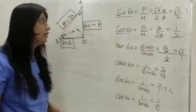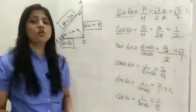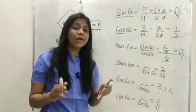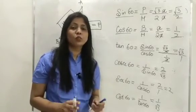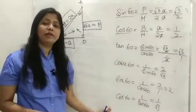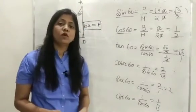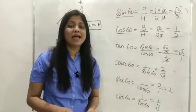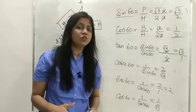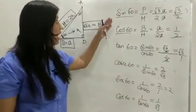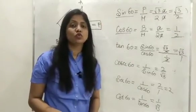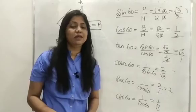These are the 6 trigonometric ratios for the 60 degree angle. In today's class we have seen how to find the 6 trigonometric ratios for 30 degrees and 60 degrees. In the next class we will see how to find the 6 trigonometric ratios for 0 degrees and 90 degrees.